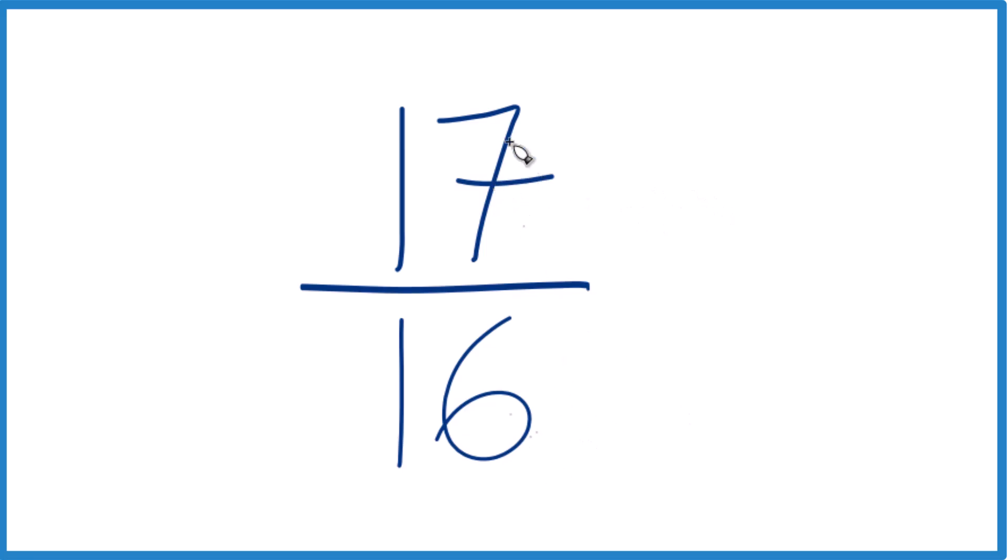But the only whole number that goes into 17 and 16 is 1. And if you divide 17 by 1 and 16 by 1, you get 17 sixteenths. So this is already simplified. We can't reduce this any further.